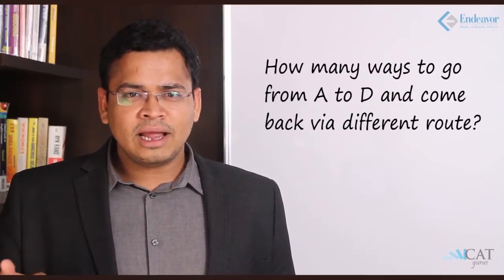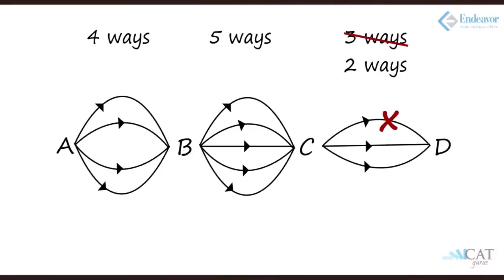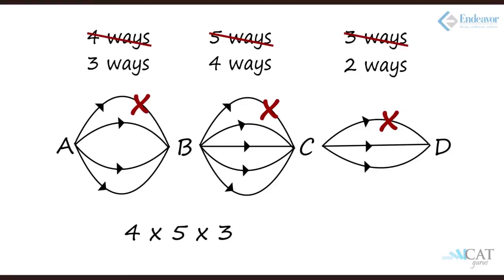Now, how many ways can I go from A to D and come back on a different route? From A to B was four, B to C was five, C to D was three. If I have to come back on a different route, I cannot take the same route I used going from C to D, so I have two ways to come back from D to C. Similarly, if I don't use that one way from B to C, I have four ways from C to B, and three ways from B to A. So the answer is four into five into three into two into four into three.